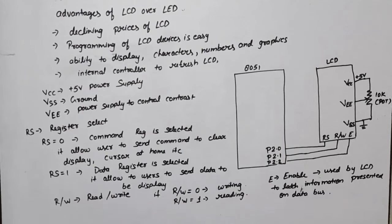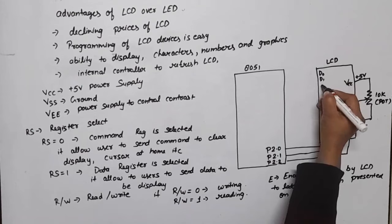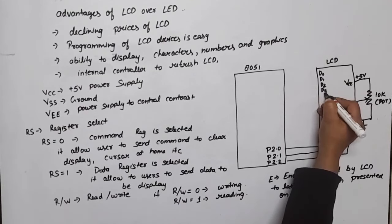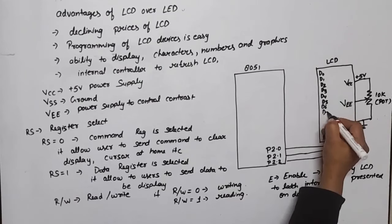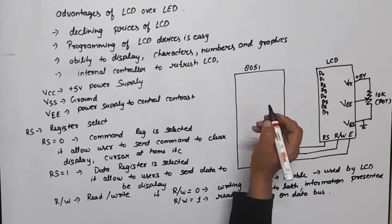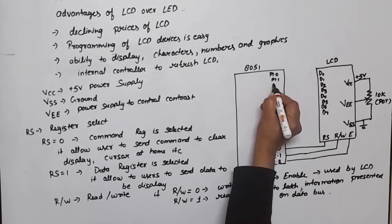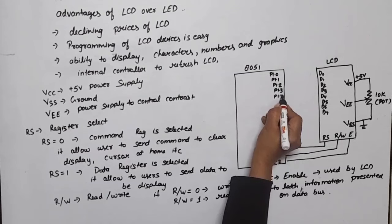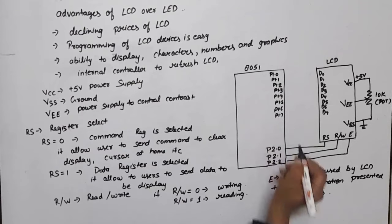Last pins are the data bus. Data bus is 8-bit: D0, D1, D2, D3, D4, D5, D6, and D7. All will be connected with port 1: P1.0, P1.1, P1.2, P1.3, P1.4, P1.5, P1.6, and P1.7.